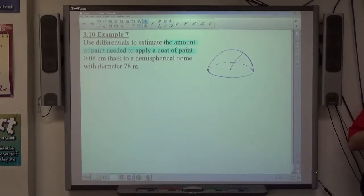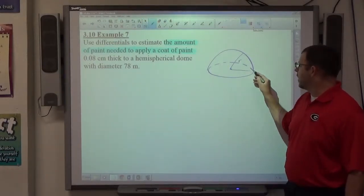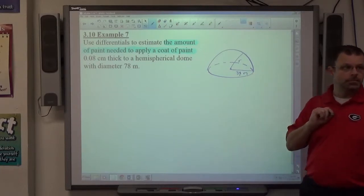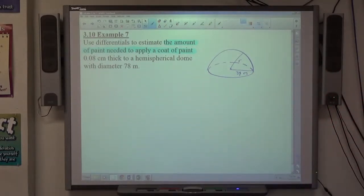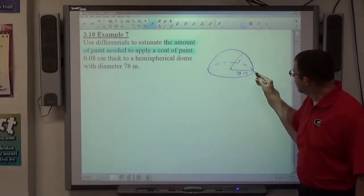What is the measurement I'm looking for here to find out how much paint I need to use? Surface area? Surface area, very good. Alright, it's a surface area issue. Now, what I want you to understand here is this, the diameter is 78 meters, which means the radius is 39 meters, right? We want the paint to be 0.08 centimeters thick.